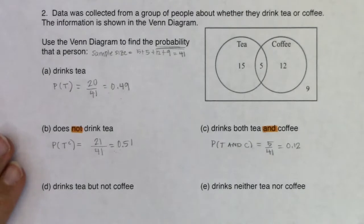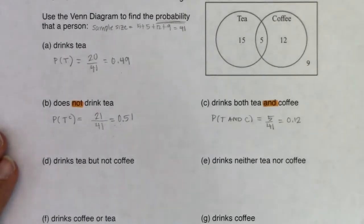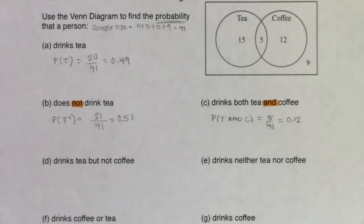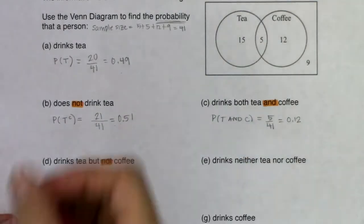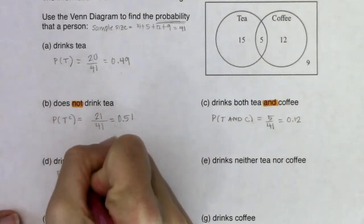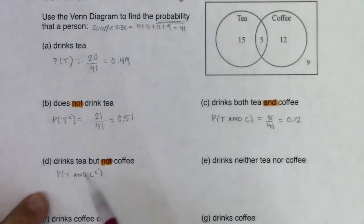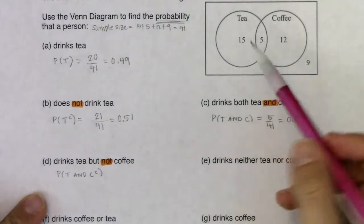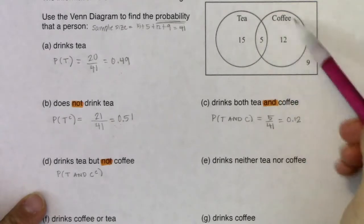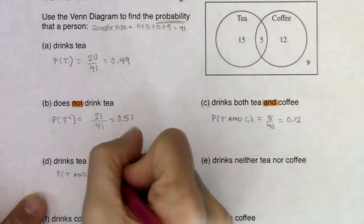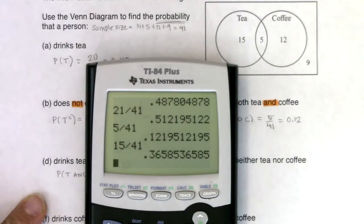For part D, I want tea but not coffee. The 'not' is the buzzword here, so I want the probability of tea AND coffee-complement. What part of the Venn diagram represents folks drinking tea and not coffee? It is the left moon — the 15 folks drinking tea but not in the coffee circle. So we have 15 out of 41, which gives us about 37%.